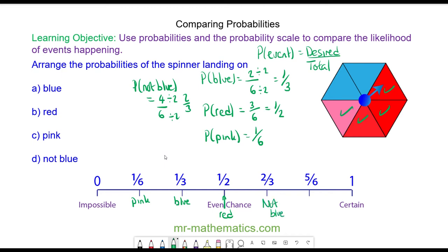And because the probabilities are being placed along the probability scale, we can see out of the four events, it is most likely to have an event which is not blue. It is least likely to have the event which is pink.